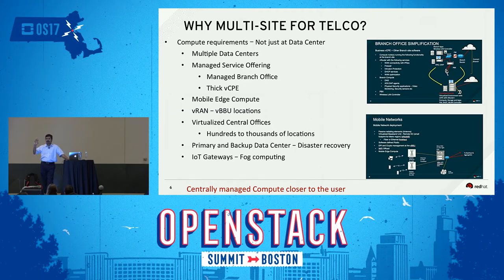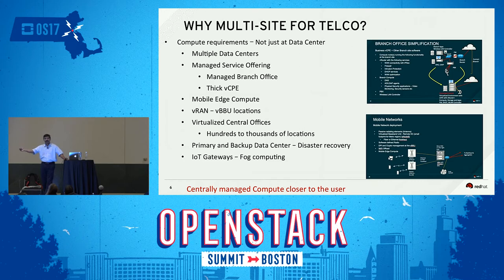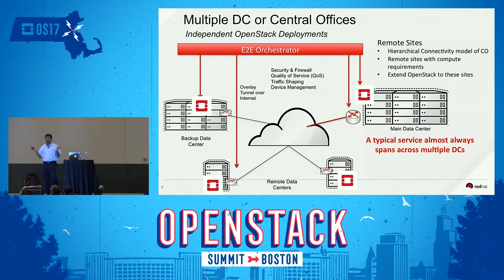The collapsed branch deployment model has been around a long time: multiple sets of capabilities within a branch are collapsed through virtualization into virtual functions running on standard servers, managed remotely. All of these requirements push telcos to deploy compute capability much closer to the edge of their network or closer to the consumer. When you do that, the challenge becomes: how are you going to manage, instantiate, and orchestrate those compute nodes?